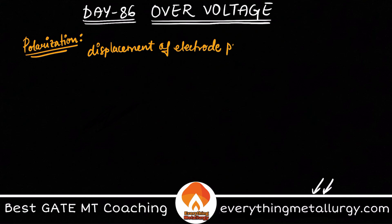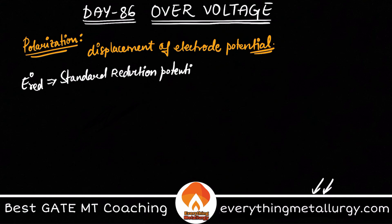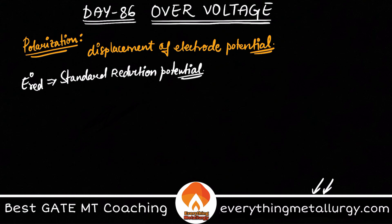Usually when we talk about corrosive behaviors, we have something called the EMF series. We get values of standard reduction potentials — E naught reduction. The fundamental behind this is we take the Standard Hydrogen Electrode (SHE) and couple it with the metal electrode we want to study, in order to find out the standard reduction potential.